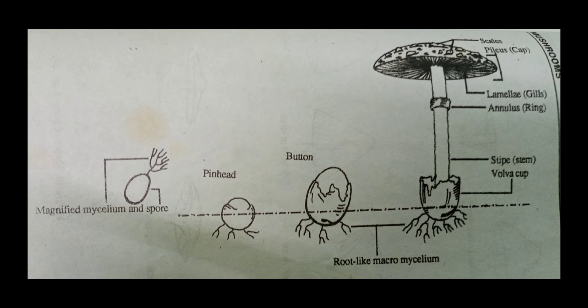White thread-like growth occurring on the growing medium after spawning is termed as spawn running. The mushrooms first appear as very small buttons known as pinheads. When they grow, pinheads turn into young unopened mushrooms called pachas.